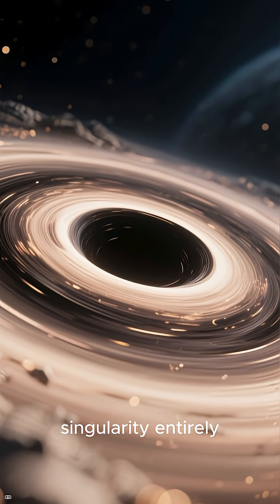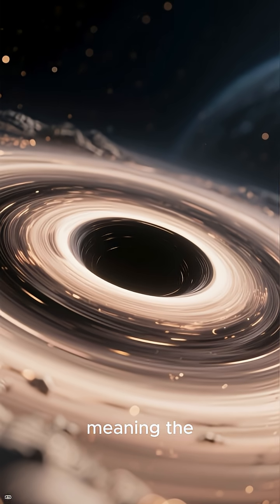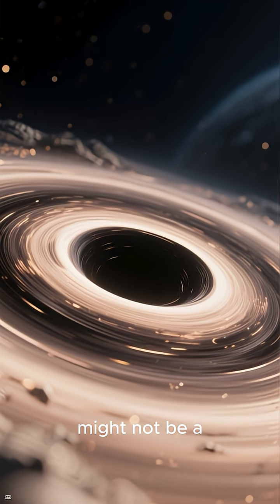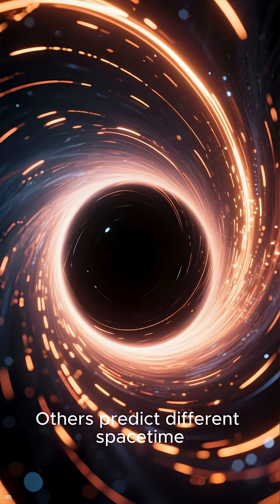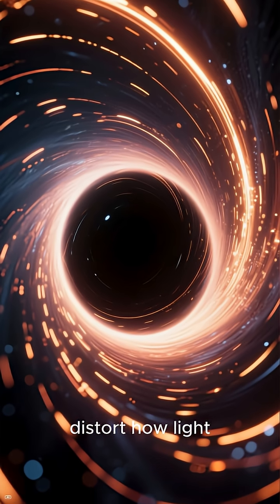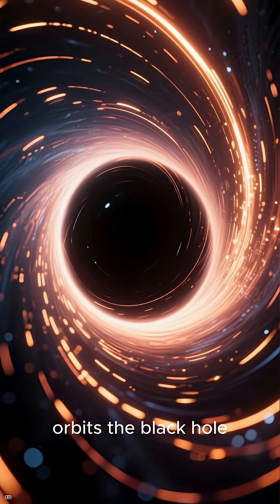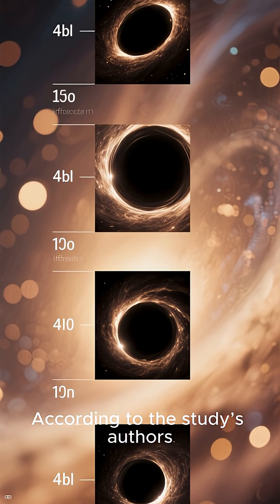Some alternative theories remove the singularity entirely, meaning the center of a black hole might not be a point of infinite density. Others predict different spacetime geometries that slightly distort how light orbits the black hole.